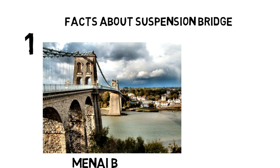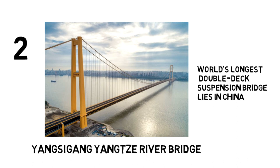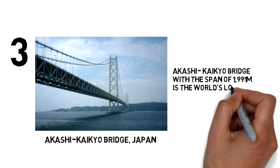Let us learn about some facts about suspension bridges. Number one: the Menai Bridge was the first ever suspension bridge and it is still in use. Number two: the Yangtze suspension bridge of China is the world's longest double-deck suspension bridge. Number three: the Akashi Kaikyo suspension bridge of Japan is considered the world's longest bridge with a length of 1991 meters.